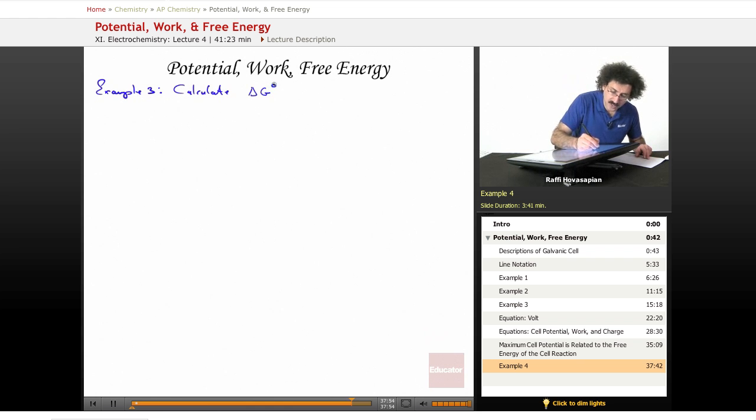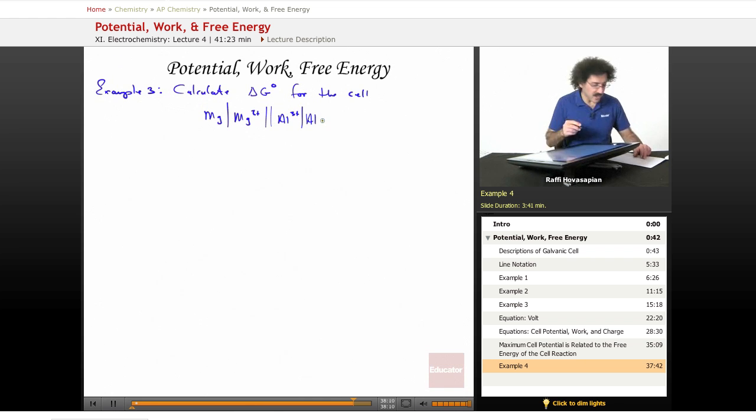Calculate delta G standard for the cell Mg, Mg²⁺, Al³⁺, Al. Let's calculate the free energy for this. When we calculated this, we got the cell potential was 0.71 volts. Therefore, delta G standard equals minus nFE.